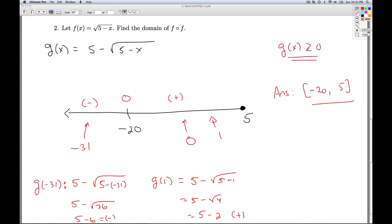So for our domain of f composed with f, we needed x to be less than or equal to 5, and we needed this to be true. And so my final answer, well, this satisfies both those criteria, so our final answer is negative 20 to 5. That'll do it for number 2, and that'll do it for checkpoint quiz 5.3.